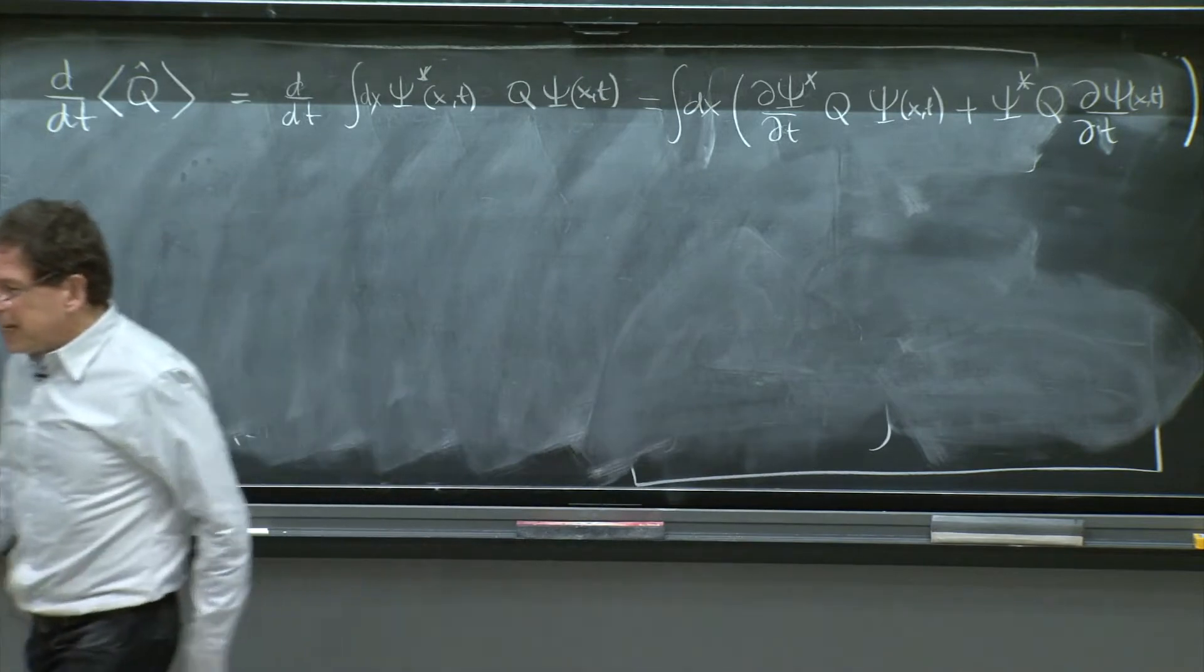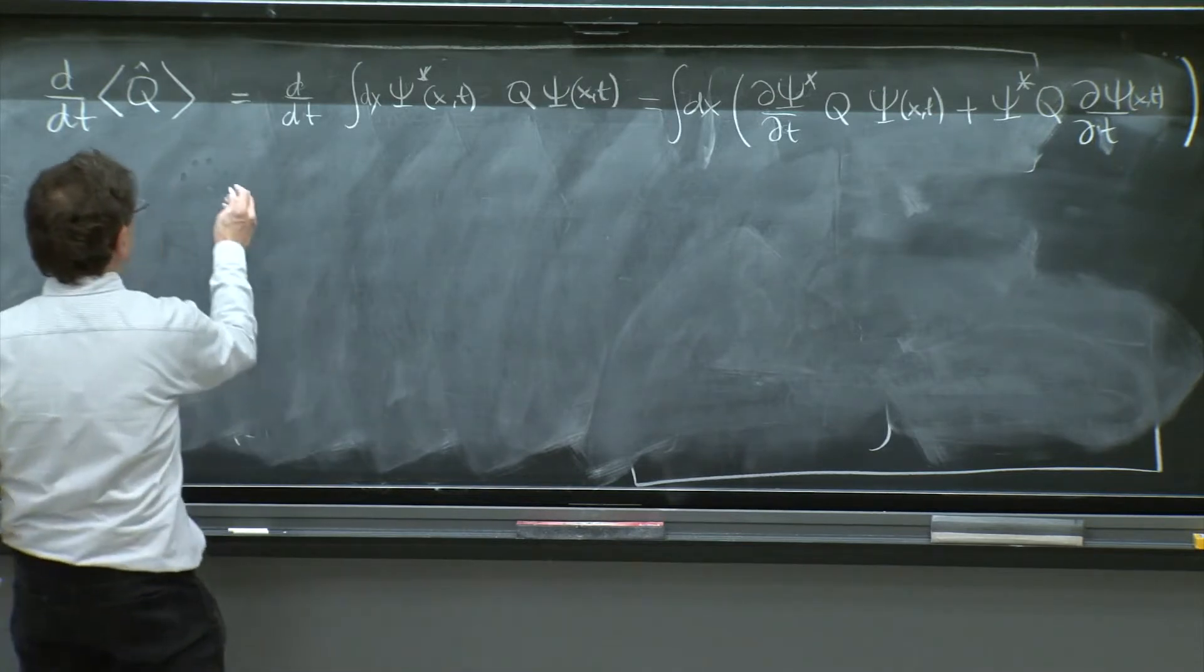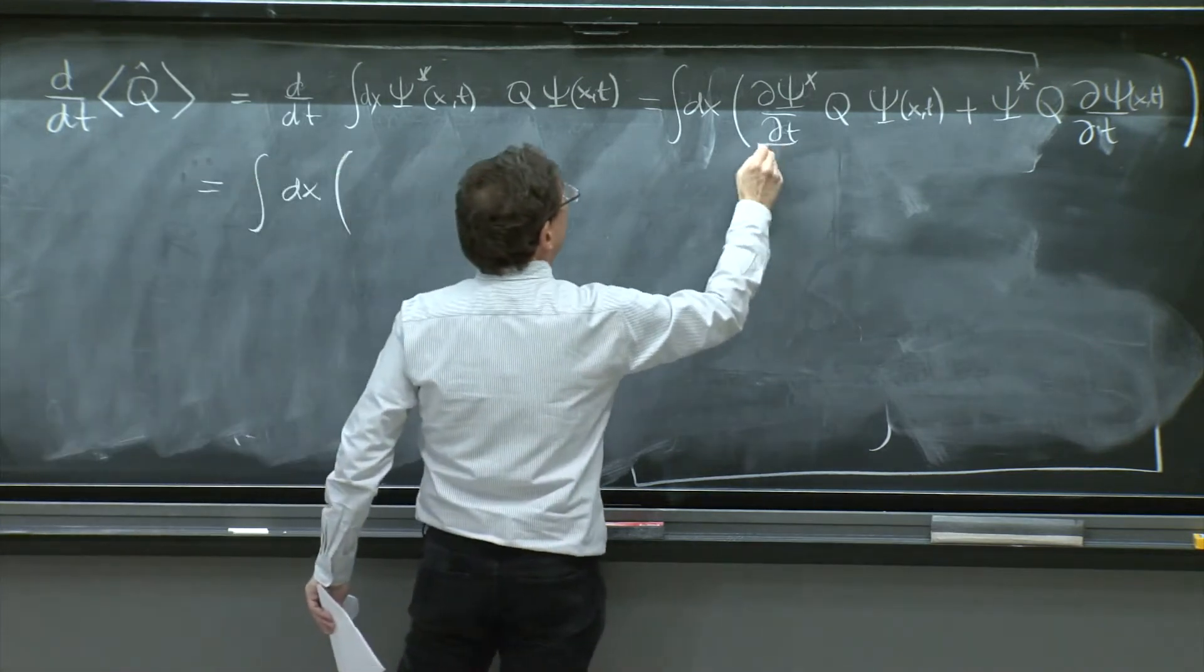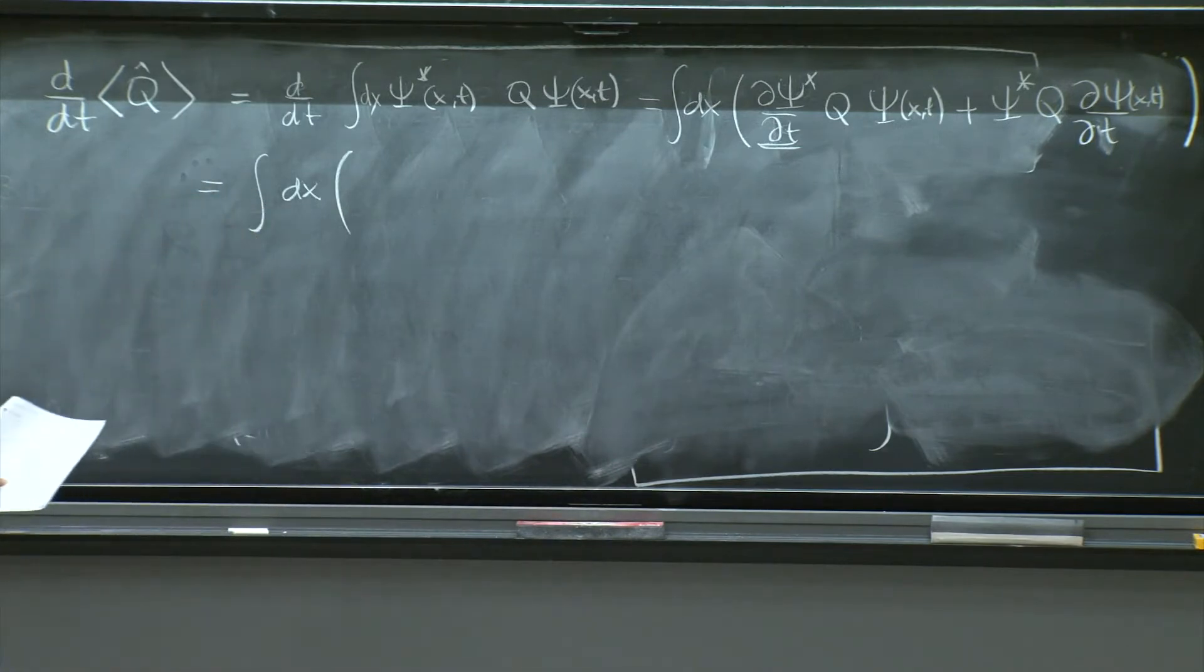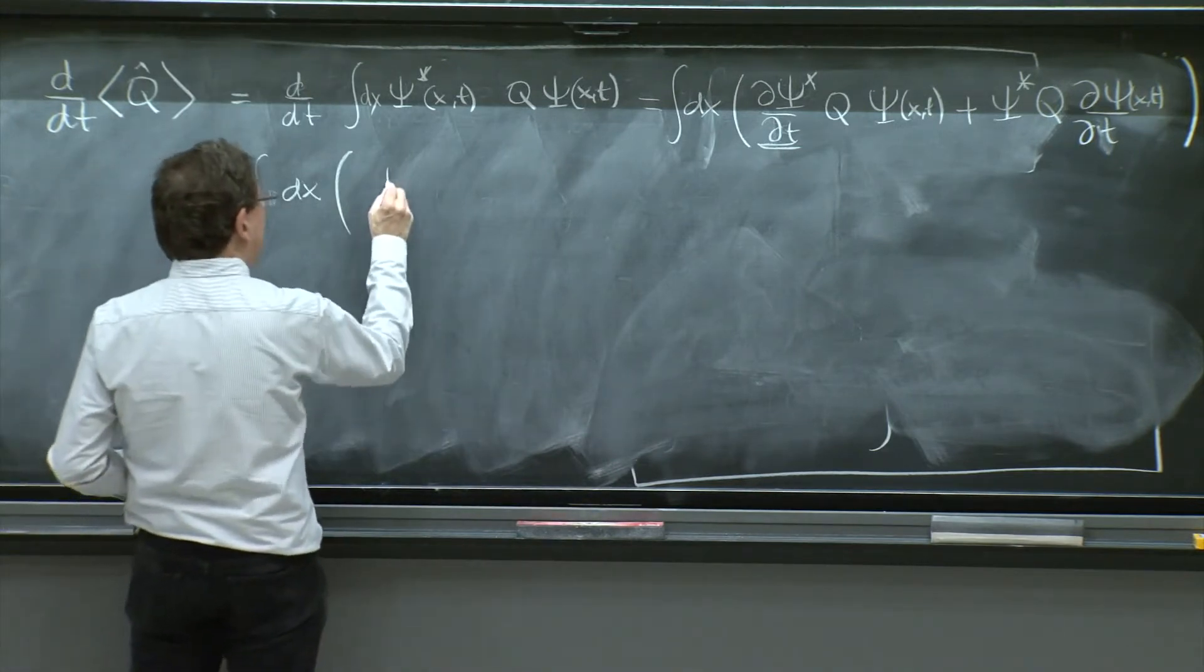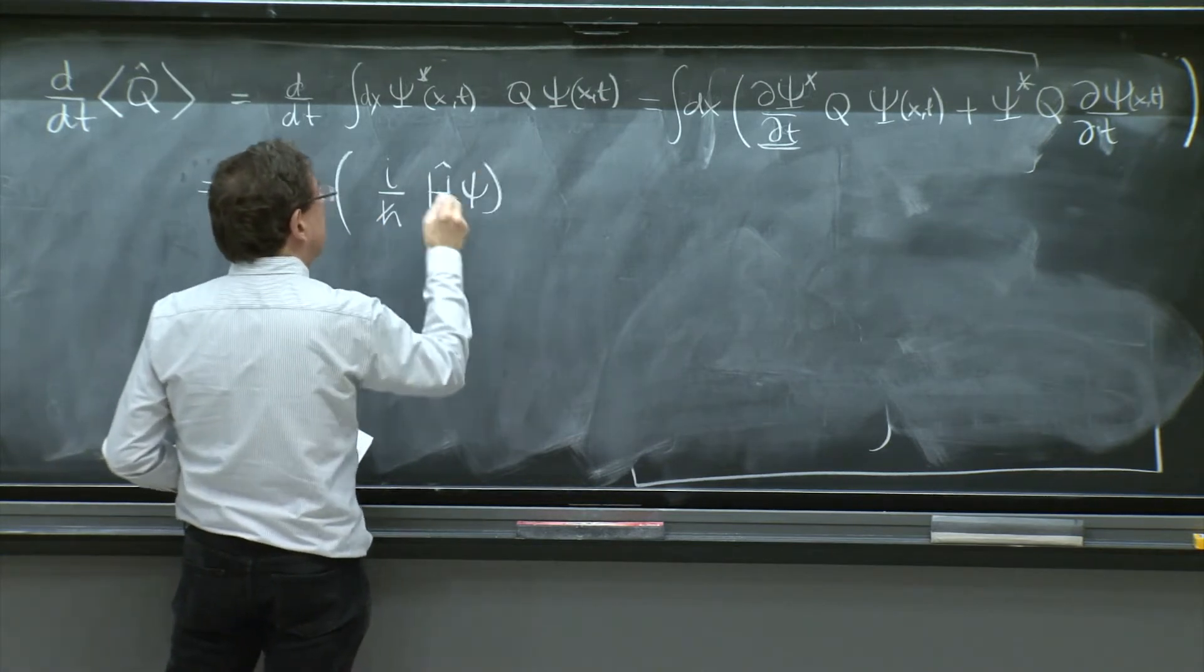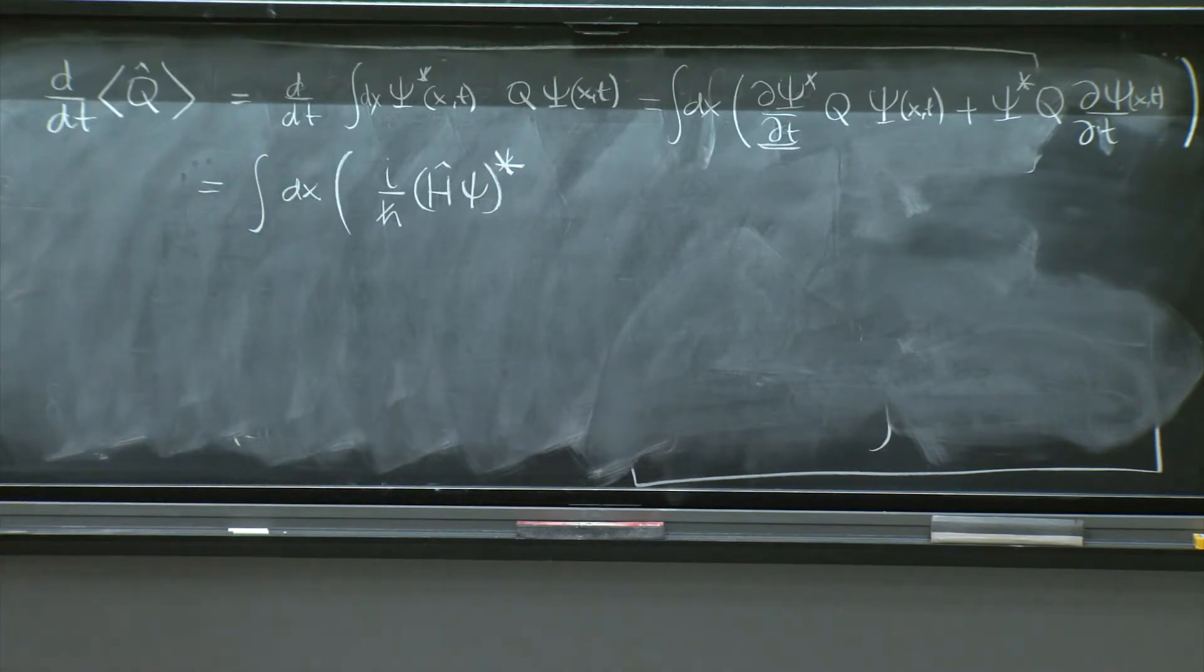You've seen that kind of stuff. And what is it? Well, integral dx. This is the Schrödinger equation. The psi star dt is i over h bar h psi star from the Schrödinger equation.